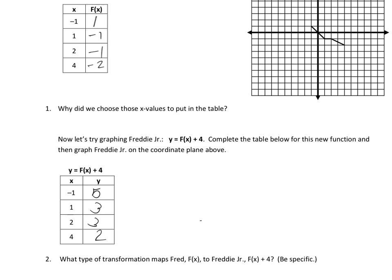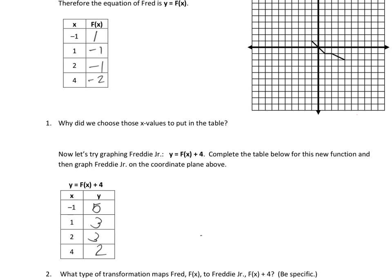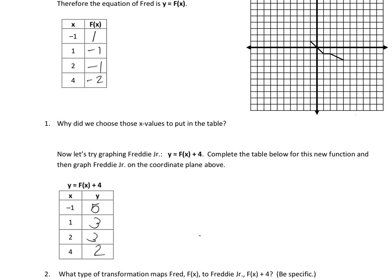I'll graph these points in red. Negative 1, 5 — left 1, up 5. Next is 1, 3 — right 1, up 3. Next is 2, 3 — right 2, up 3. Finally, 4, 2 — right 4, up 2. You can see it's the same exact graph — we've just shifted it up 4 units.